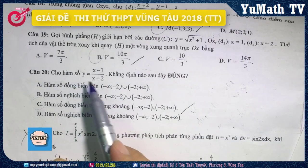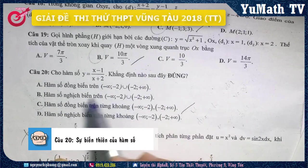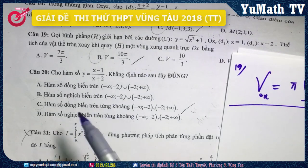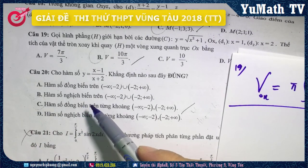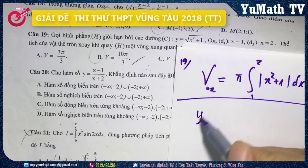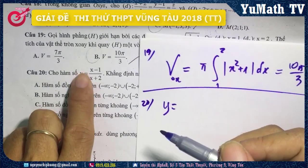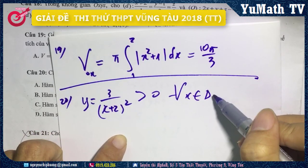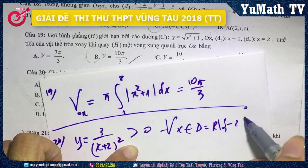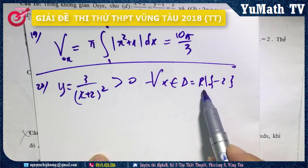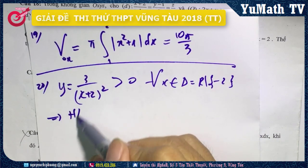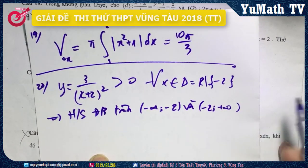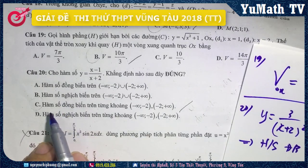Câu số 20: Cho hàm số y = (x-1)/(x+2). Để xét sự đồng biến và nghịch biến của hàm số, mình sẽ xét dấu của y'. y' = 3/(x+2)² luôn lớn hơn 0 với mọi x thuộc tập xác định D = ℝ\ {-2}. Như vậy hàm số luôn đồng biến trên (-∞, -2) và (-2, +∞). Mình chọn đáp án C.